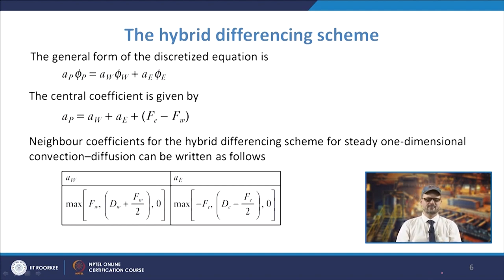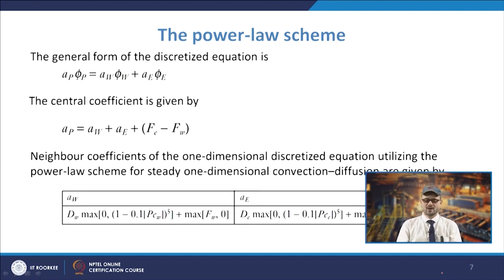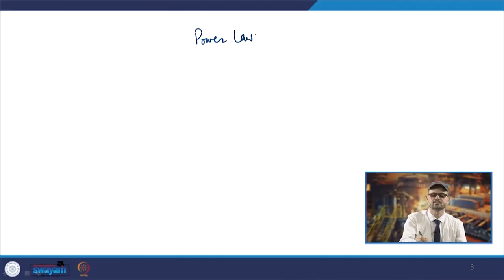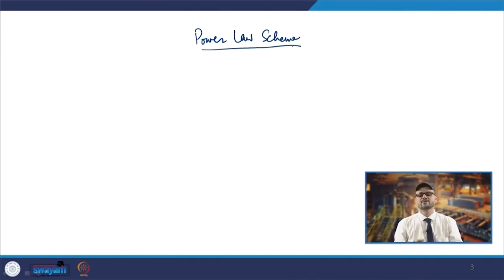Another differencing scheme is the power law scheme. It uses a polynomial expression depending upon the Peclet number — specifically the Peclet number raised to the power 5. When the cell Peclet value exceeds 10, diffusion is assumed to be zero and the flux is calculated using a polynomial expression.